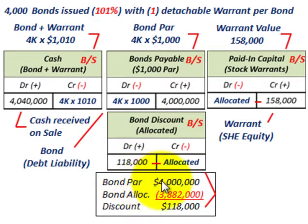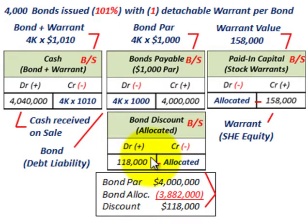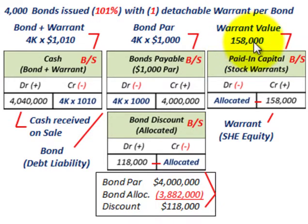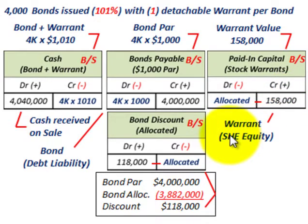The bond discount of $118,000 was based on our calculation: bonds par of $4,000,000 minus the allocated amount of $3,882,000. The warrant value we allocated at $158,000 goes to a paid-in capital account for stock warrants on the balance sheet — we credit that for $158,000. The warrant is part of stockholders' equity.